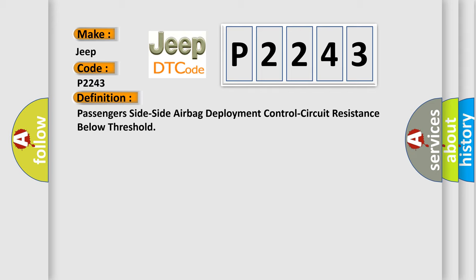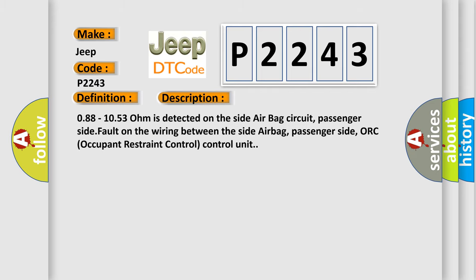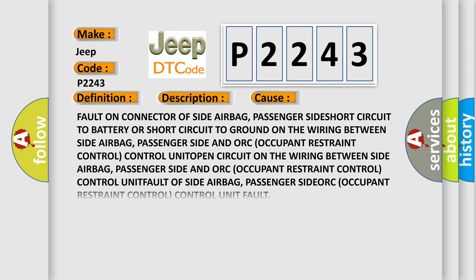Here is a short description of this DTC code. A resistance of 088–1053 ohm is detected on the passenger-side airbag circuit. There is a fault on the wiring between the passenger-side airbag and the occupant restraint control unit. This diagnostic error occurs most often in these cases: a fault on the connector of the passenger-side airbag; a short circuit to battery or short circuit to ground on the wiring between the passenger-side airbag and the occupant restraint control unit; a fault of the passenger-side airbag itself with a short circuit on the connecting wiring; or a fault of the occupant restraint control unit itself.